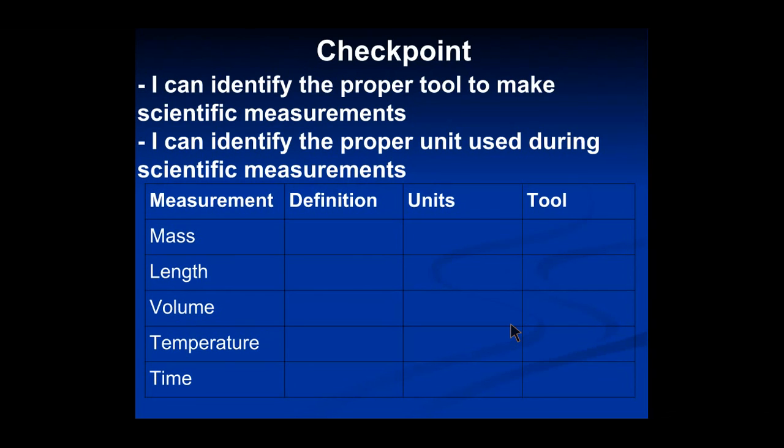OK, let's do a checkpoint to see what we've learned. After the last few slides, you should be able to identify the right tool and the right unit used to make scientific measurements. When the video is done, I'd like you to fill out this table to help you study. For example, the definition of mass we remember is the amount of matter in an object. The unit is grams and the tool is a balance or a scale. Make sure you can fill out this table completely. Use your notes or go back and re-watch some of the video.